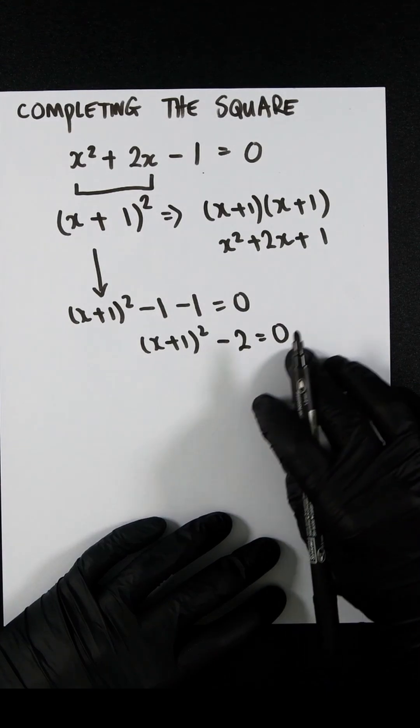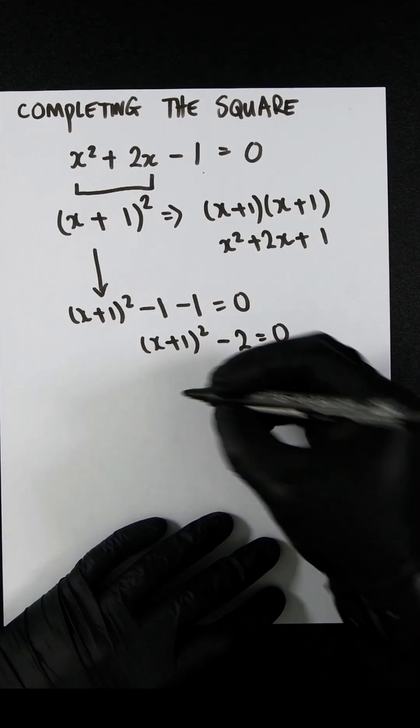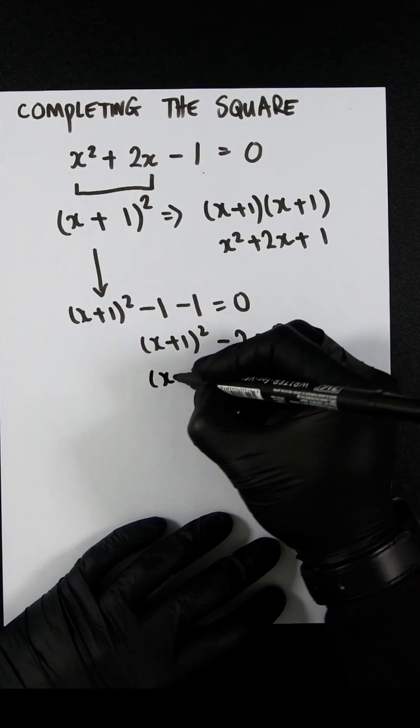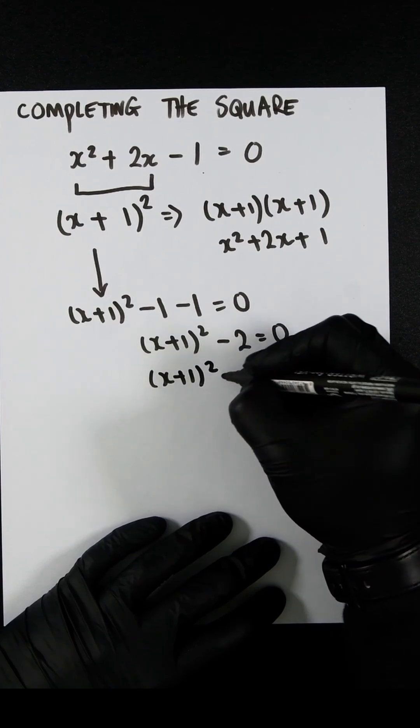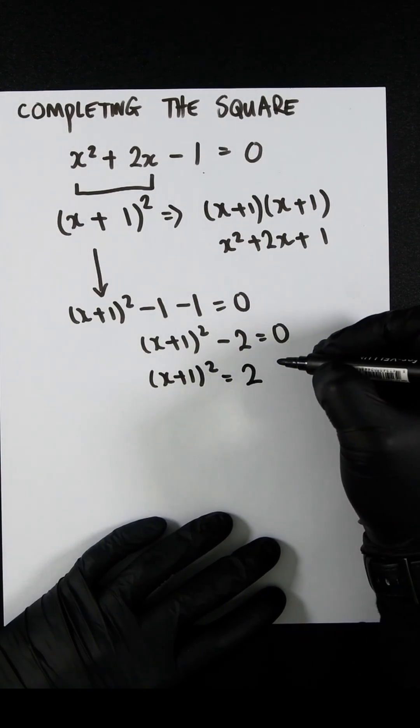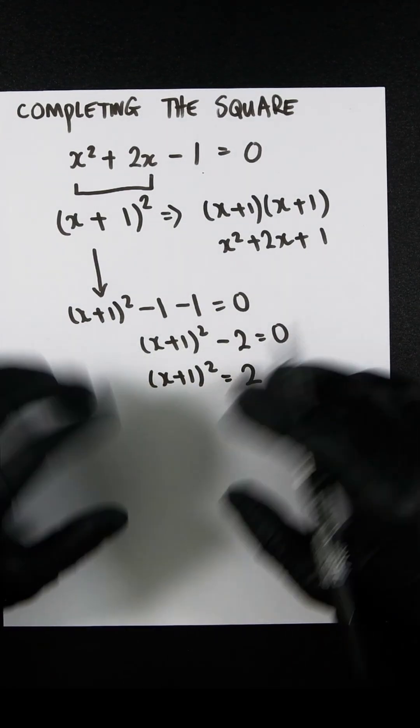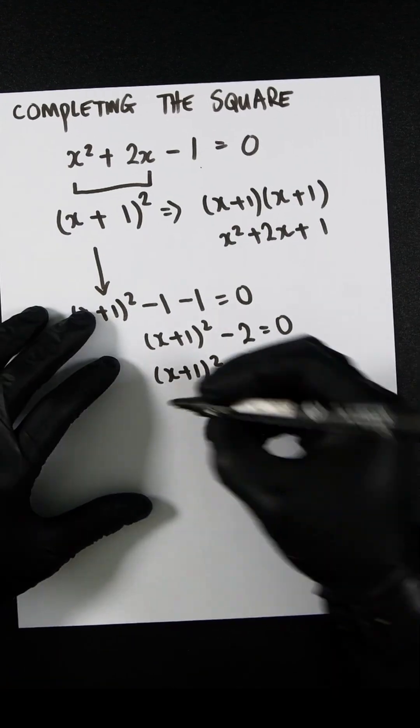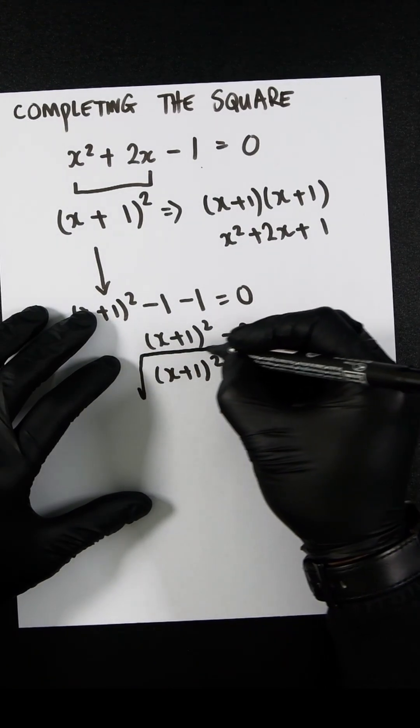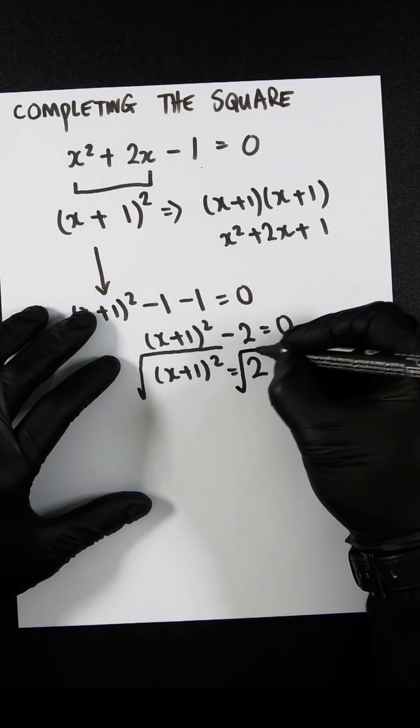We can now move this two to the other side. So let's do that. We're going to have (x + 1)² equals two. How do we get rid of the squared on this side is by square rooting it. So let's square root both sides.